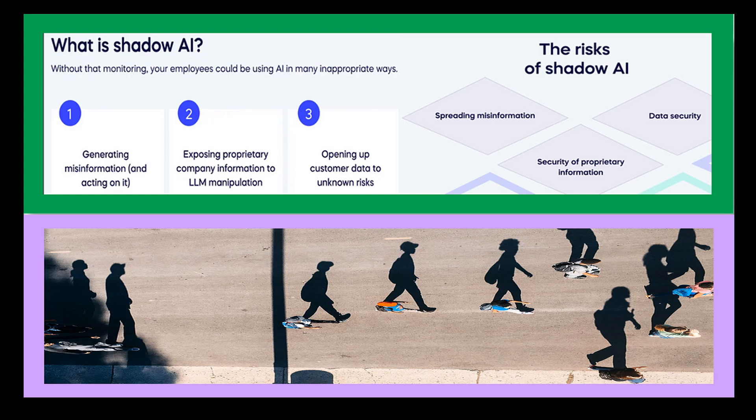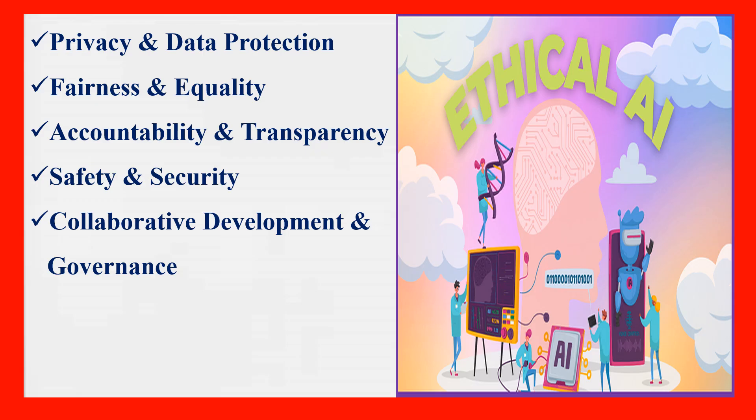Next comes Ethical AI. Ethical AI refers to the responsible development, deployment, and governance of artificial intelligence systems that prioritize human values, principles, and well-being over mere technological progress or economic gains. It involves designing AI systems that adhere to certain moral standards, safeguard individual rights and freedoms, minimize harm to society, and demonstrate transparent and explainable behavior.